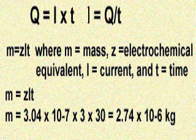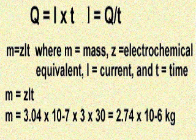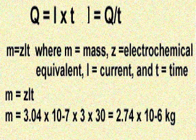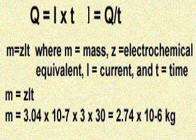Let's look at an example. A current of 3 amps flows through a nickel sulfate solution for 30 seconds. Calculate the mass liberated from the nickel anode. Z for nickel is equal to 3.04 times 10 to the minus 7th kilograms per centimeter. Using M equals ZIT, M is equal to 3.04 times 10 to the minus 7th, times 3, times 30, or 2.74 times 10 to the minus 6th kilograms.